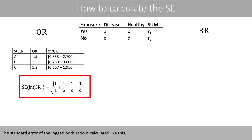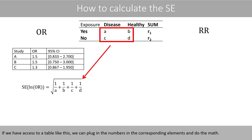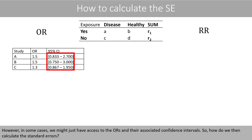The standard error of the logged odds ratio is calculated using a specific formula. If we have access to a table with raw data, we can plug in the numbers in the corresponding elements and do the math. However, in some cases we might just have access to the odds ratios and their associated confidence intervals, so how do we then calculate the standard errors?